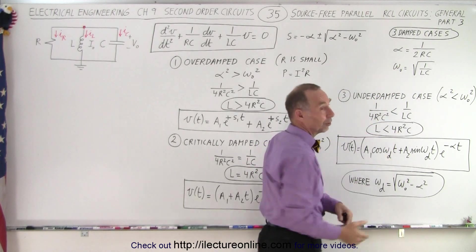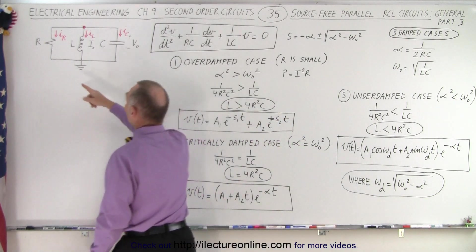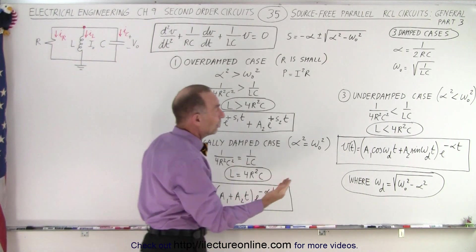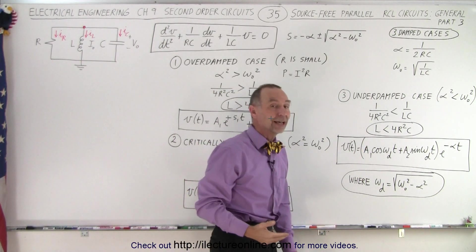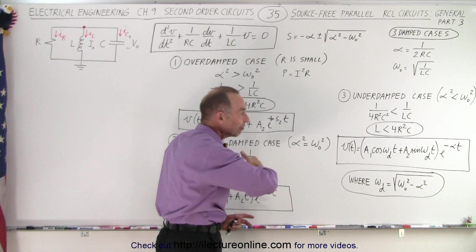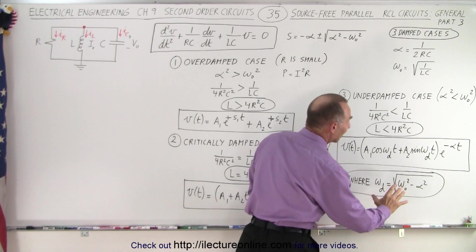then no current would flow through the resistor, then all the current would flow through the inductor and the capacitor, and then you would have the natural frequency again. But if some current flows to the resistor, then the oscillation frequency will be slower by this factor right here. And so you can see that connection again.